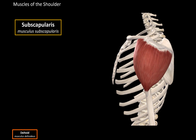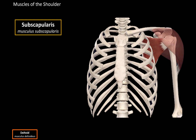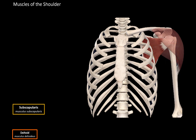Then we have the subscapularis. Looking at the scapula anteriorly, here is the subscapular fossa and here is the subscapularis muscle. It originates from the subscapular fossa and inserts at the lesser tubercle and the crest of the lesser tubercle on the humerus. When this muscle contracts, it adducts the arm and internally rotates the arm.